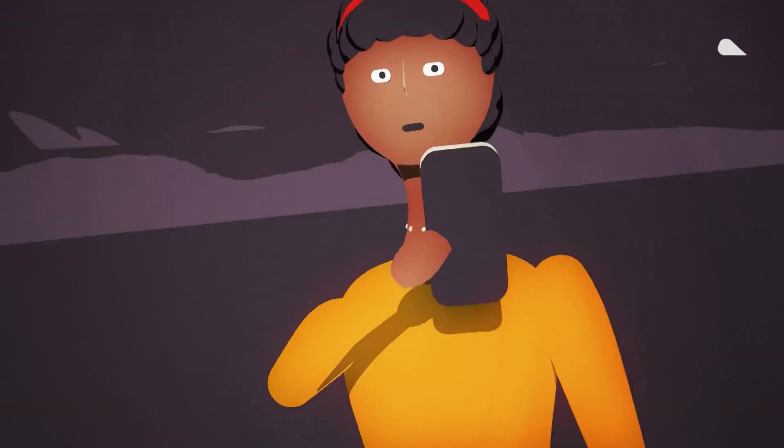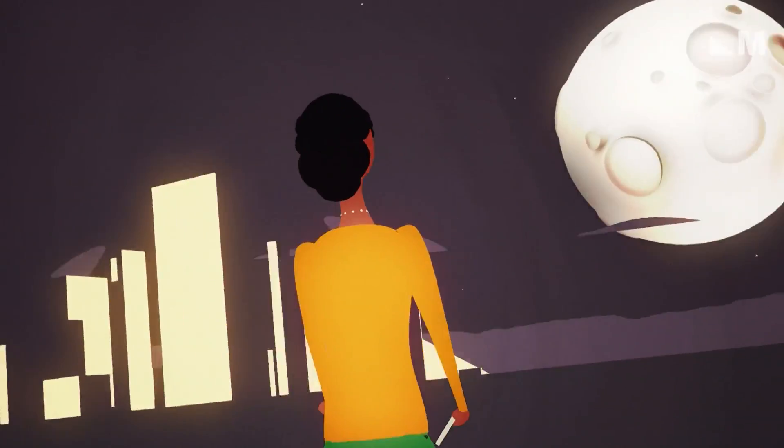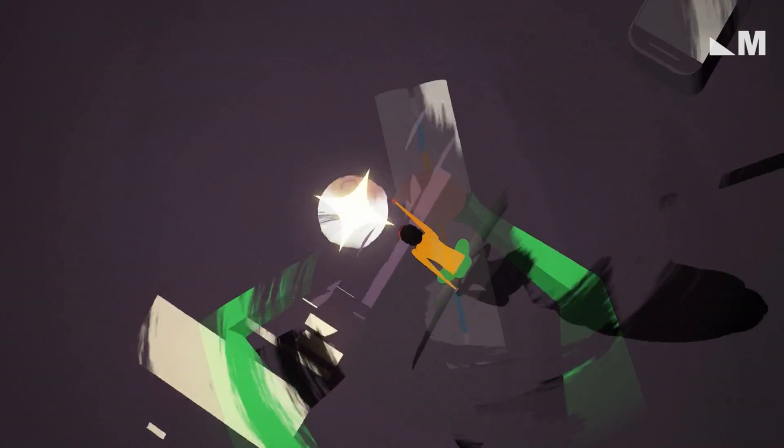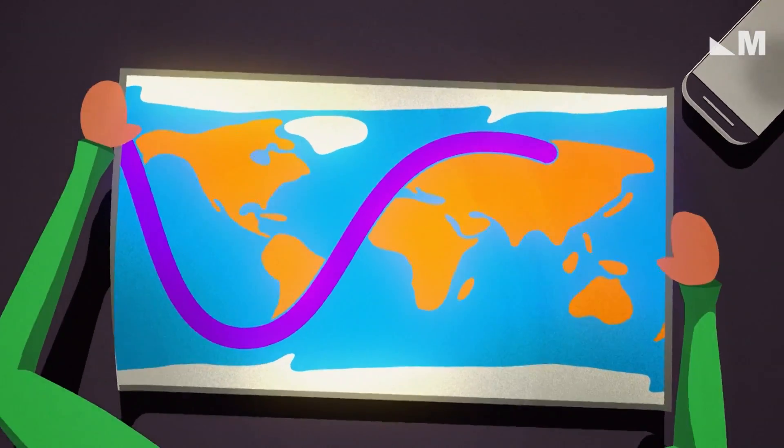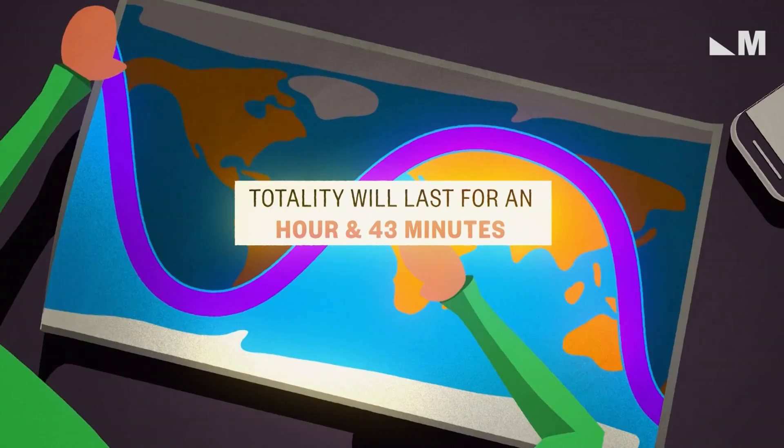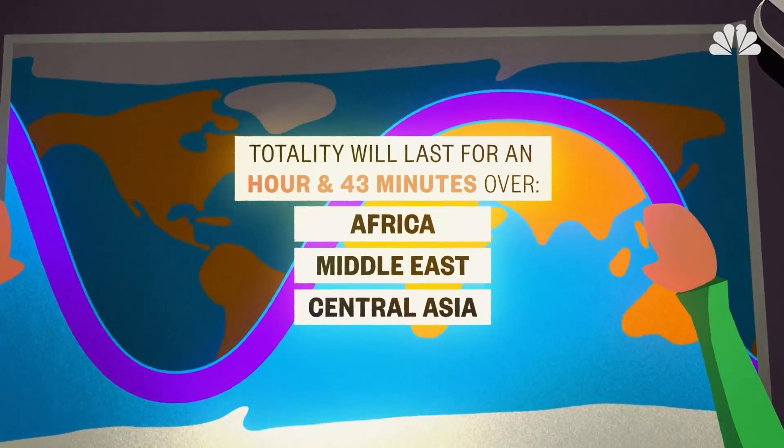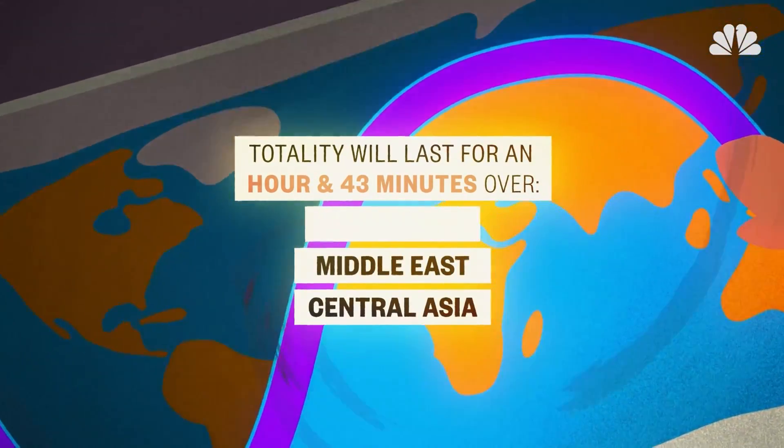On July 27th, a total lunar eclipse will turn the Moon blood-red in the night sky. A rare cosmic coincidence is making it the longest one this century, with totality set to last a full hour and 43 minutes over Africa, the Middle East, and Central Asia.